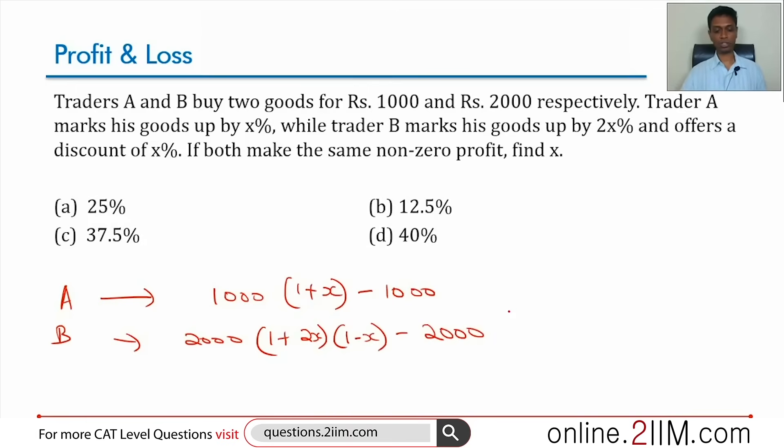These two are equal, we are done, and practically all we need to do is solve. The first one is 1000X. The second one is 2000 into (1+2X)(1-X) minus 2000, which expands to 1 - 2X² + 2X - X...